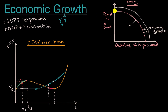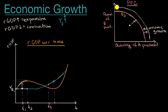For example, this could be our production possibilities curve at T sub three, and then this is our production possibilities curve at T sub four, where our full employment output has increased.